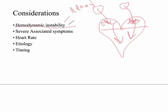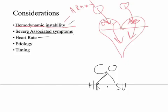The second consideration is severe associated symptoms, which are typically due to hemodynamic instability. The third thing to consider is heart rate. Rate control is more important than rhythm control. Cardiac output equals heart rate times stroke volume, so regardless of whether the rhythm is abnormal, the rate still determines cardiac output. If the heart rate is too high or too low, you want to address that.